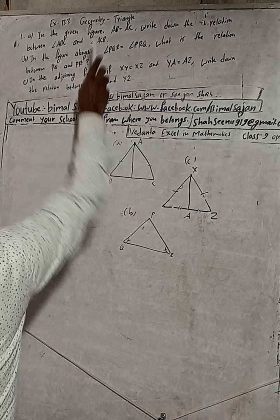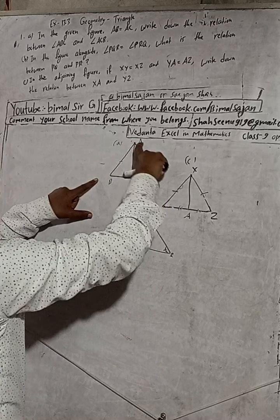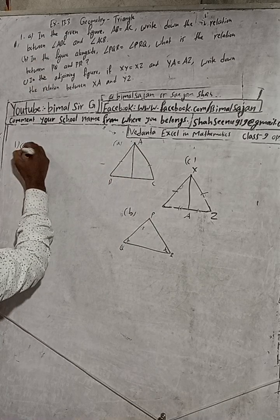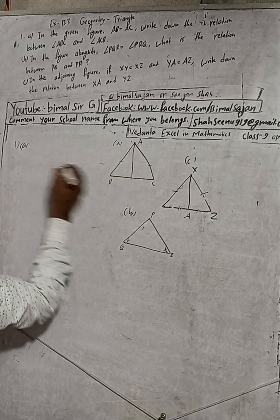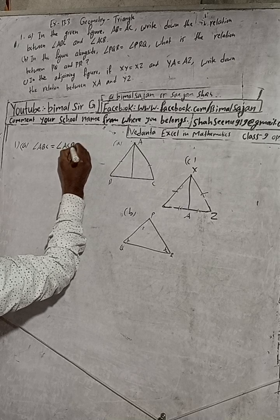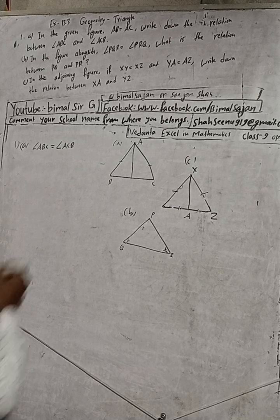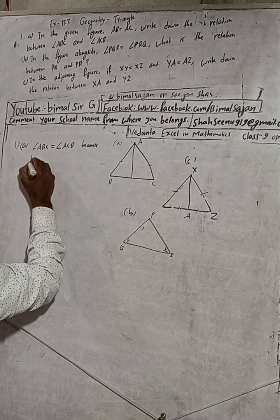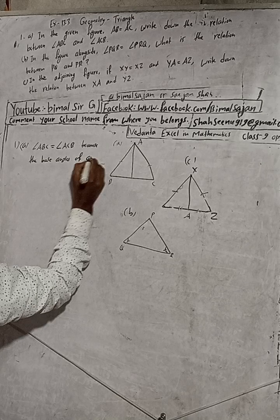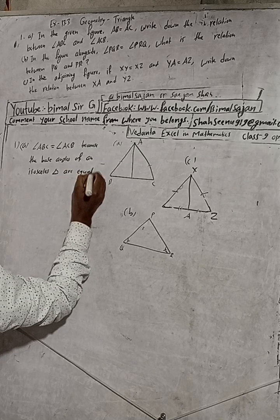Write down the relation between angle ABC and angle ACB. In this given figure, AB is equal to AC — this side is equal to this side. The relation between angle ABC and angle ACB is: angle ABC is equal to angle ACB. The reason is because the base angles of an isosceles triangle are equal. This is the short answer for this question.